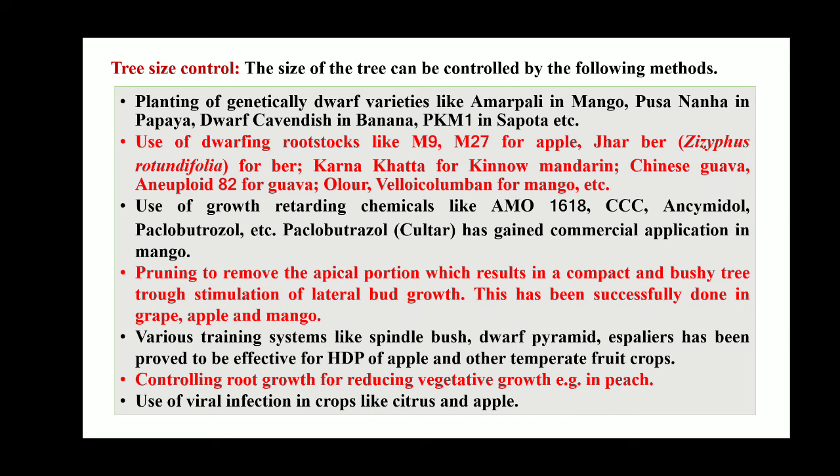Size of the tree can be controlled by the following methods. First, planting of genetically dwarf varieties like Amrapali in mango, Pusa Nanha in papaya, Dwarf Cavendish in banana, and PKM1 in sapota. Second, use of dwarfing rootstock like M9 and M27 for apple, Jujube for Ziziphus, and Karnakatta for Kinnow.